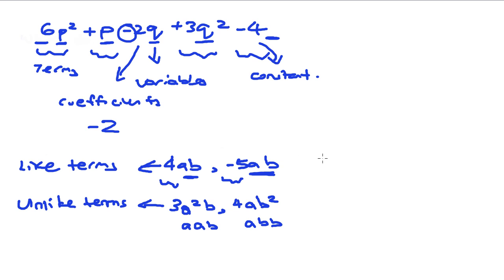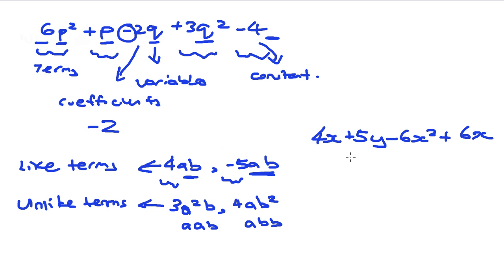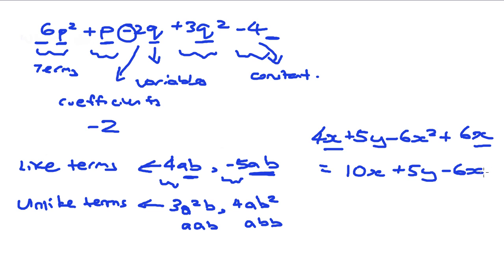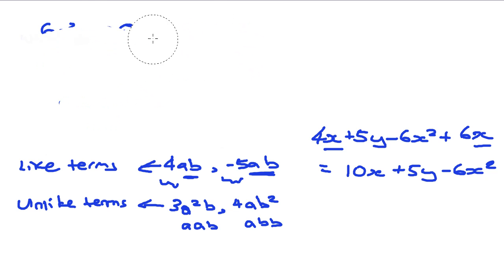The concept of like terms and unlike terms is very important for simplification of algebraic expressions. For example, 4x plus 5y minus 6x squared plus 6x — the first thing you have to do to simplify is to find the like terms. In this case x and 6x are like terms; the rest are unlike terms because one is x squared and one is y. With like terms you can add them together, so 6x plus 4x becomes 10x, giving 10x plus 5y minus 6x squared. If the terms are unlike terms, you cannot add them together.